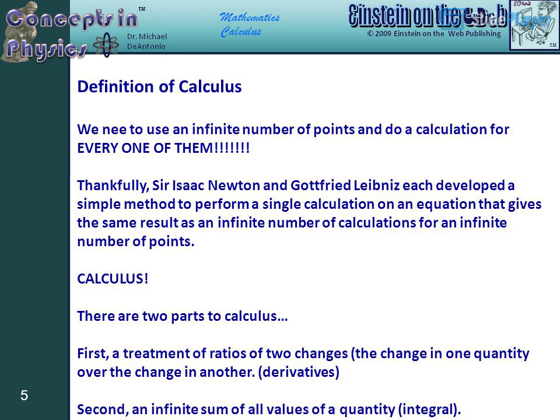We need to use an infinite number of points and do a calculation for every one of them. Thankfully, Sir Isaac Newton and Gottfried Leibniz each developed a simple method to perform a single calculation on an equation that gives the same result as an infinite number of calculations for an infinite number of points.